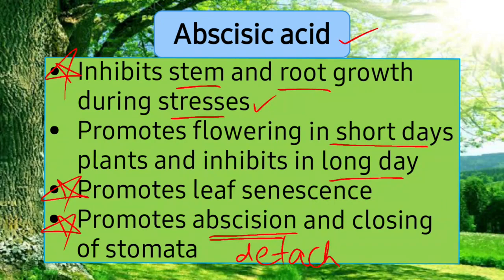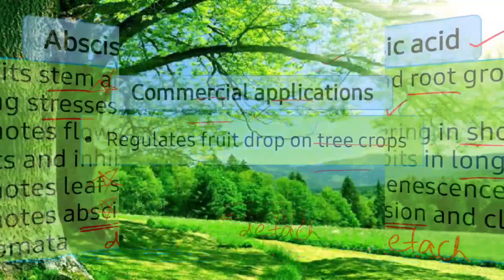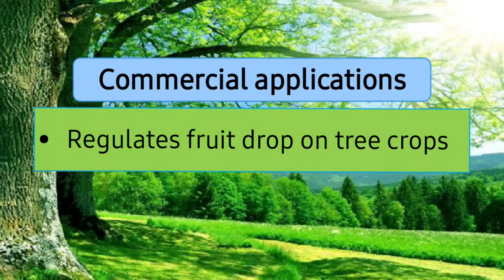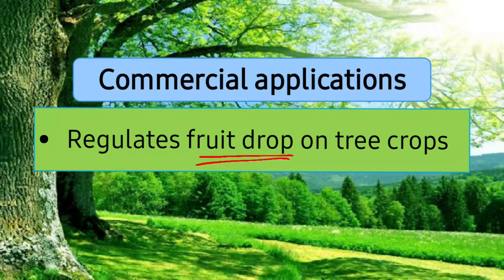Abscisic acid also helps in the closing of stomata and assists in abscission — the detachment of leaves or fruits from plants. Its commercial importance is that it regulates fruit drop: when fruits ripen and it is harvest season, spraying abscisic acid on fruit trees causes the fruits to drop on their own, making them easier to collect.